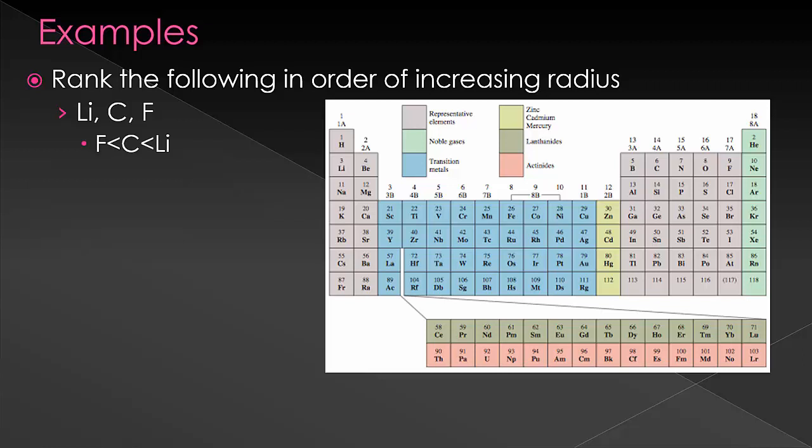Now let's take the vertical trend. Here we'll do lithium, potassium, and rubidium. We know that as we go down the periodic table, we add more shells and therefore increase the size of the atom. So the smallest one is going to be the highest on the periodic table or the one with the least number of energy shells. So that's lithium, then we'll have potassium and then rubidium.